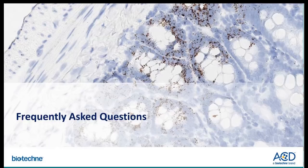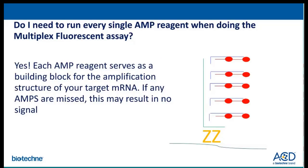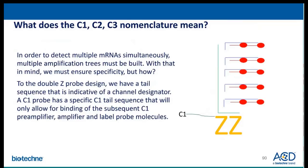Now I will quickly move to the frequently asked questions. Do I need to run every single amp reagent when doing the multiplex assay? The answer is yes. Each amp serves as a building block for the amplification structure of your target mRNA, and if an amp is missed, this may result in no signal. I want to stress the nomenclature of C1, C2, and C3 probes: each has a unique tail sequence indicating its channel designator, so the pre-amplifiers, amplifiers, and label probes specific to each channel are built on top of it.